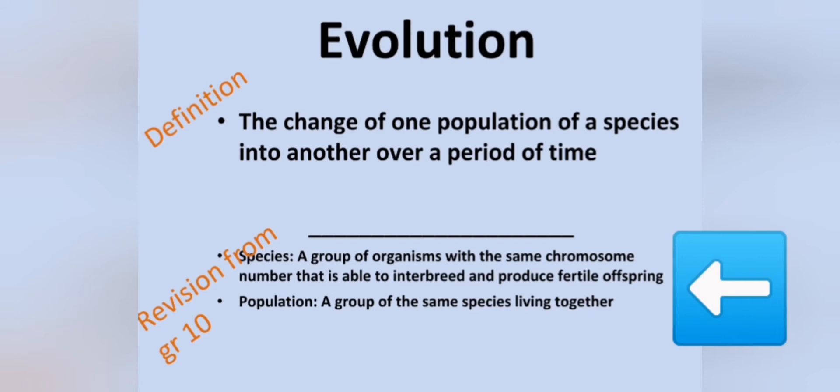So evolution is really when that population of a specific species changes chromosome number in such a way that they can't interbreed or have fertile offspring with other organisms. Even if they're similar, if the chromosome number is different they won't be able to interbreed, which means they weren't the same species.